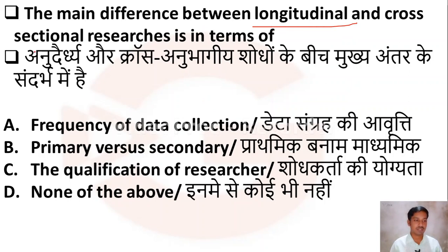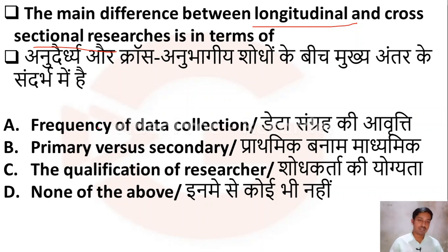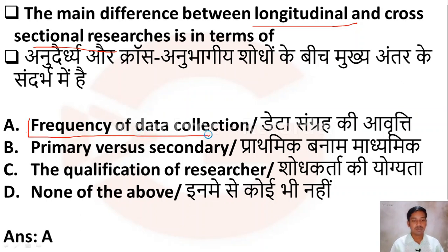The next question: what is the main difference between longitudinal and cross-sectional research? Option A: frequency of data collection, Option B: primary versus secondary data, Option C: the qualification of the researcher, Option D: none of the above. The correct answer is Option A — frequency of data collection.